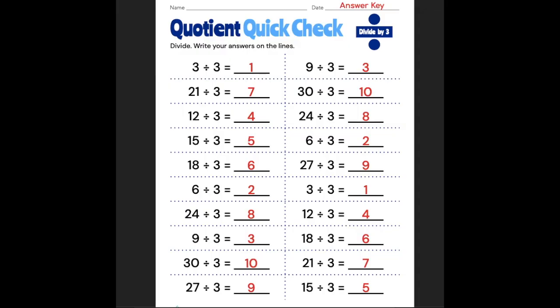3 times 2 is 6. 3 times 8 is 24. 3 times 3 is 9. 3 times 10 is 30. And 3 times 9 is 27. So everyone, we did a quotient quick check. See you next time. Bye.